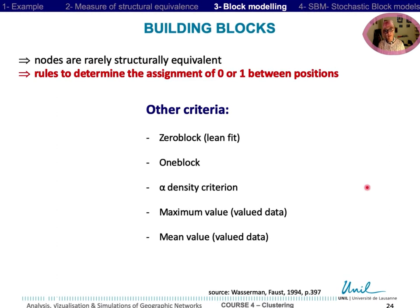But in real networks, collections of nodes are rarely structurally equivalent. So we can add other criteria as 0 block, 1 block, alpha density criterion, maximum value with valued data, or mean value.